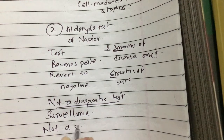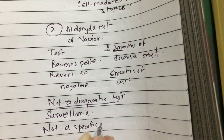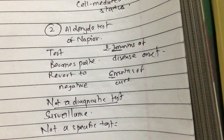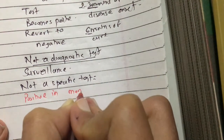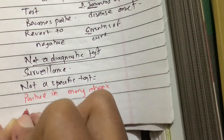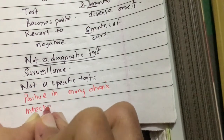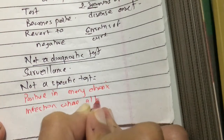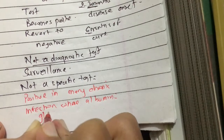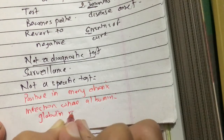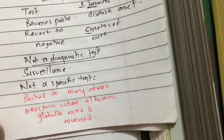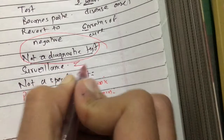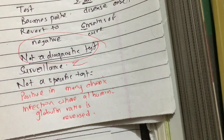The Aldehyde test of Napier is not a specific test because it is positive in many chronic infections where the albumin-to-globulin ratio is reversed. Therefore, it is not a diagnostic test; it is only used for surveillance purposes.